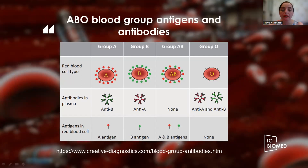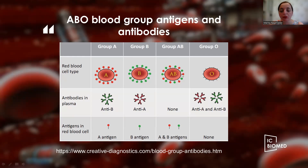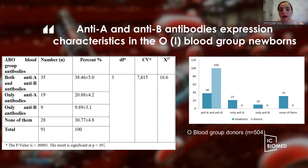Regarding ABO blood group antigens and antibodies: in AB blood group, both A and B antigens are expressed on the erythrocyte surface — this is the codominant characteristic — but there are no antibodies in the serum. In O blood group, neither A nor B antigens are present on the erythrocyte surface, but both anti-A and anti-B antibodies are present in the serum.